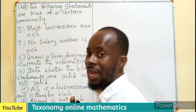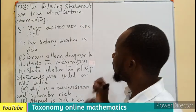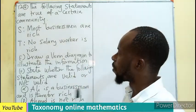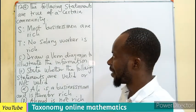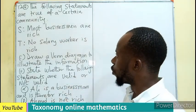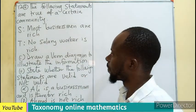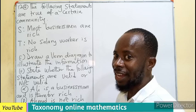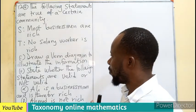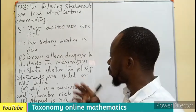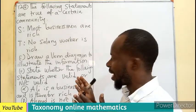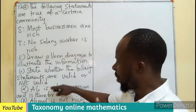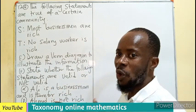The first one is on logical reasoning. The following statements are true of a certain community. S states that most businessmen are rich. T states no salary worker is rich. This is peculiar in Ghana, right? We have to draw a Venn diagram to illustrate the information given to us, then state whether the following statements are also valid or not valid.